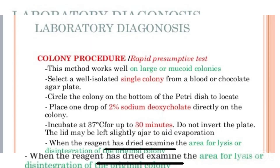For colony identification, large mucoid single colonies are observed from blood and chocolate agar plates. The procedure involves circling the colony on the Petri plate, adding one drop of 2% sodium deoxycholate, and incubating at 37 degrees Celsius for 30 minutes with the plate slightly tilted to avoid evaporation. When the reagent has dried, examine the area: a positive result shows the colony disintegrated, while a negative result shows no change.